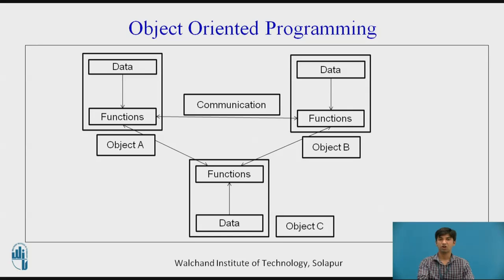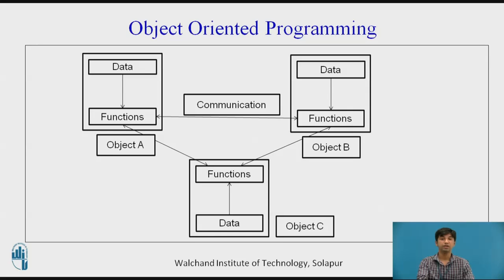Some features of object-oriented programming: emphasis is on data rather than procedure — data is treated as a critical element rather than the algorithms written. The program is divided into objects. Data is hidden and cannot be accessed by external functions. Objects may communicate with each other through functions. New data and functions can be easily added whenever necessary. It follows a bottom-up approach in program design.